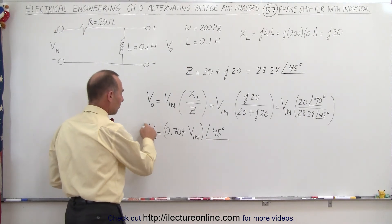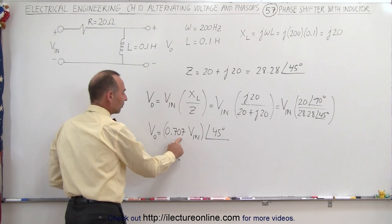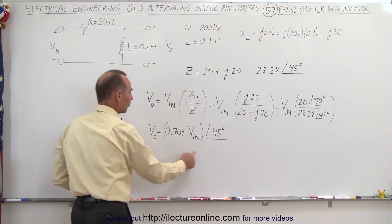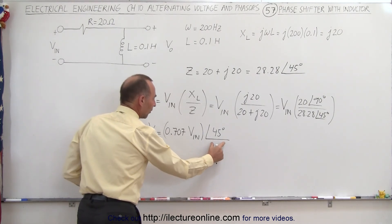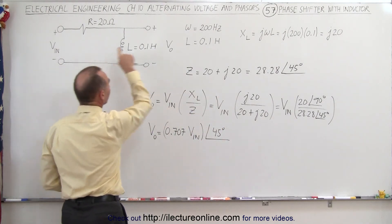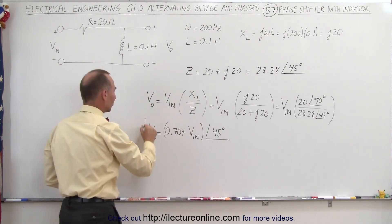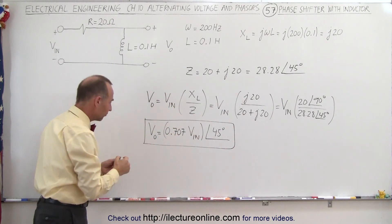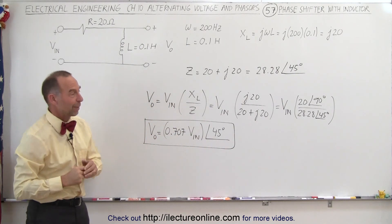Also notice that the magnitude of the output voltage is 0.707 times the magnitude of the input voltage, with a phase difference of 45 degrees between the input and output voltage. So that's what happens when you make a phase shifter using an inductor instead of a capacitor.